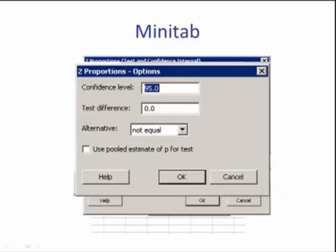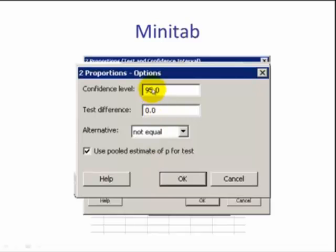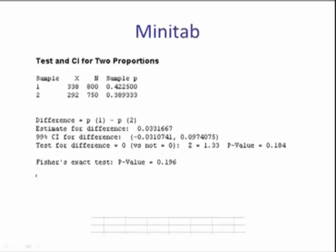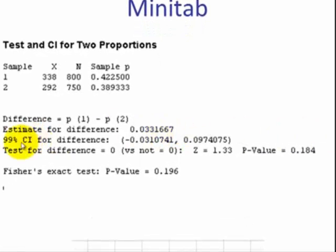We click options. We want to select use pooled estimate of p for test and we want to change the confidence level from 95 to 99. We want to leave the alternative a two-tailed test because Minitab will not construct the confidence interval if it's a left-tailed test or a right-tailed test. We hit OK and OK again. In the session window we see that the 99% confidence interval is given here.